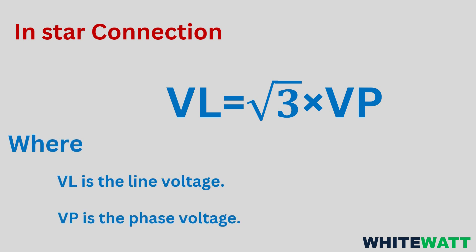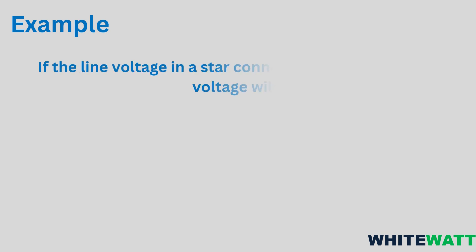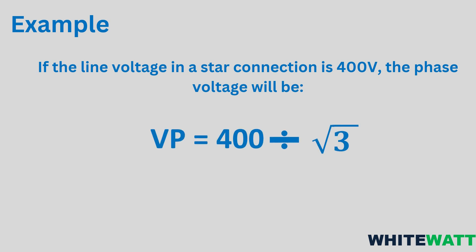For example, if the line voltage in a star connection is 400 volts, the phase voltage will be VP equals 400 divided by square root of 3, so the answer becomes 230 volts.